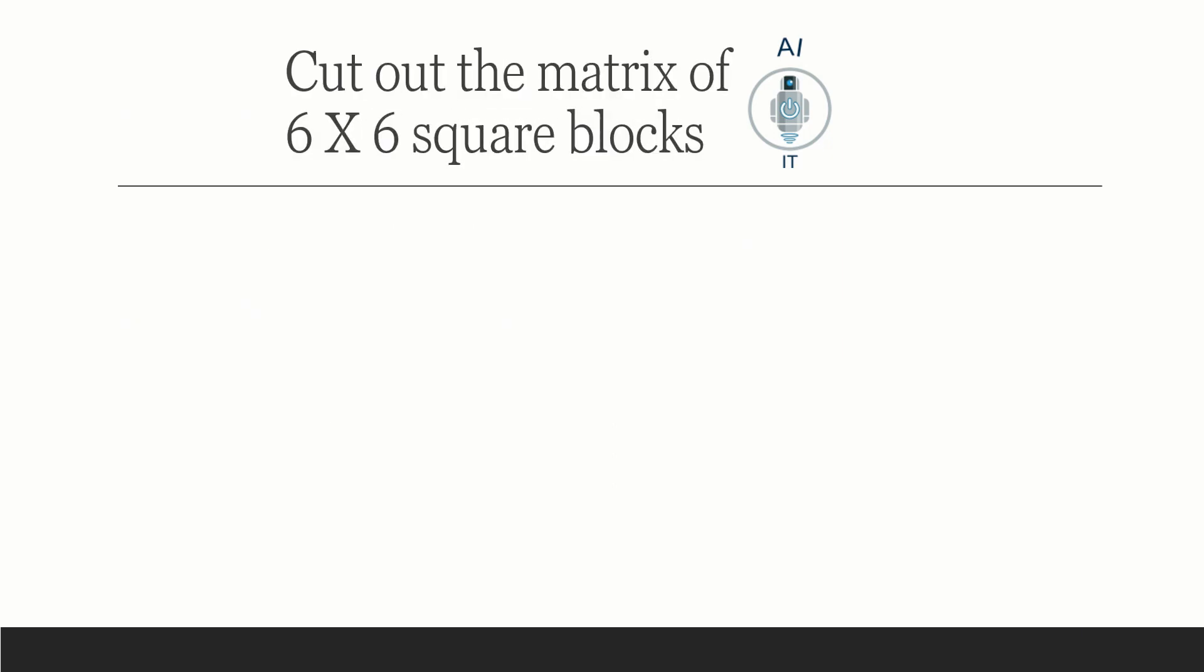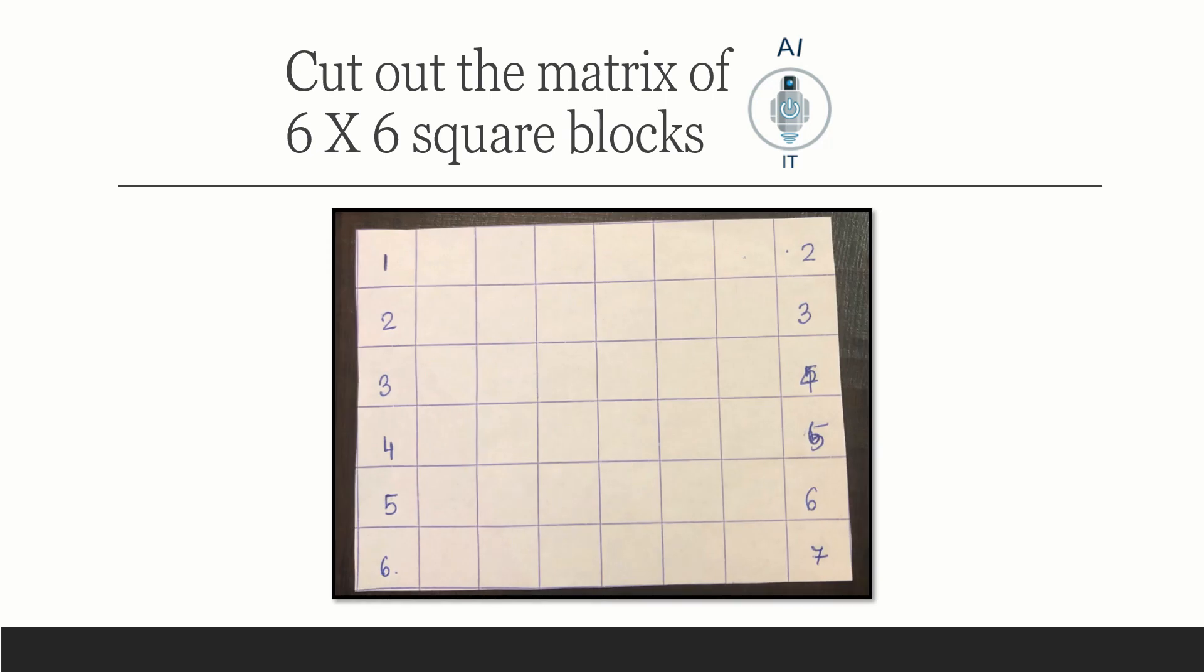First, let us cut out the matrix of 6 by 6 square blocks. Now as you see, you will have to number it as 1, 2, 3, 4, 5, 6 on the left side and 2, 3, 4, 5, 6, 7 on the right side.